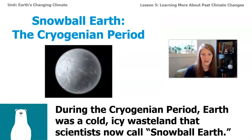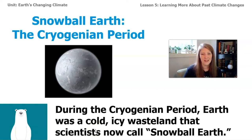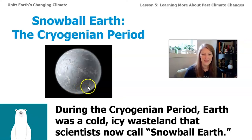Now let's go on to the next part of the article about something called the Cryogenian period. During the Cryogenian period, Earth was a cold, icy wasteland that scientists now call Snowball Earth. Looking at this artist's rendition, you can see the Earth is just covered with a layer of ice. So what caused this to happen and how could we model that in the sim?